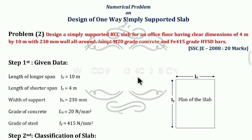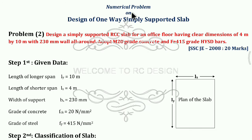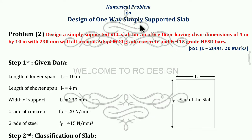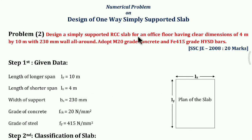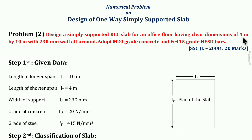Welcome. In this video we are discussing a numerical problem on design of a one-way simply supported slab. This is problem no. 2, taken from SSC J.E. Civil, asked in 2008 for 20 marks. The question: Design a simply supported RCC slab for an office floor having clear dimensions of 4 meter by 10 meter with 230 mm wall all around. Adopt M20 grade concrete and FE415 grade HYSD bars.